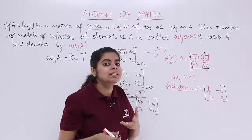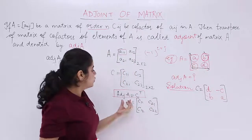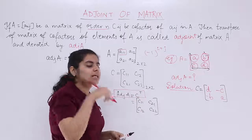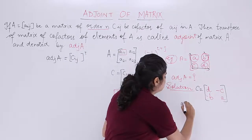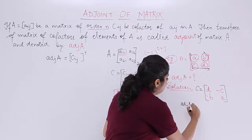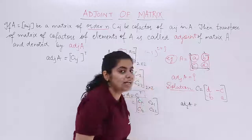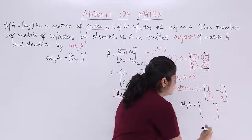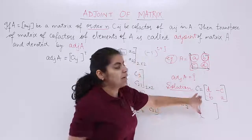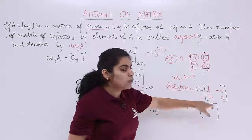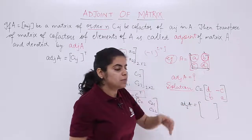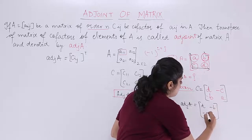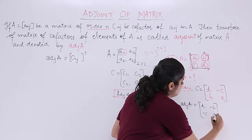This is the cofactor matrix, but this is not the final answer. The adjoint is the transpose of the cofactor matrix. Taking the transpose — rows become columns and columns become rows — you get adjoint of A equal to the matrix [D, -B; -C, A].